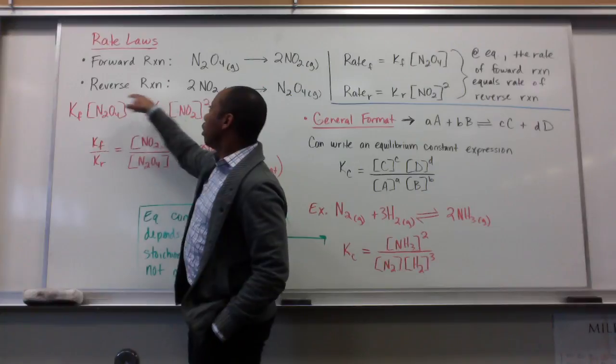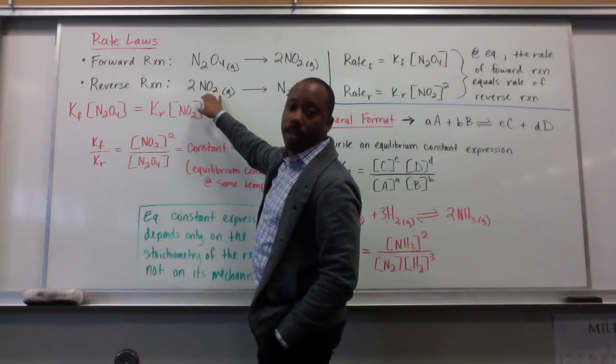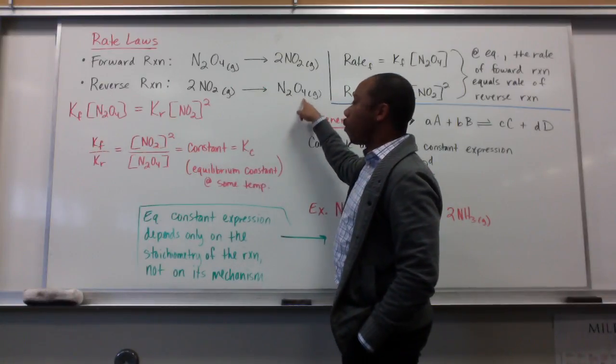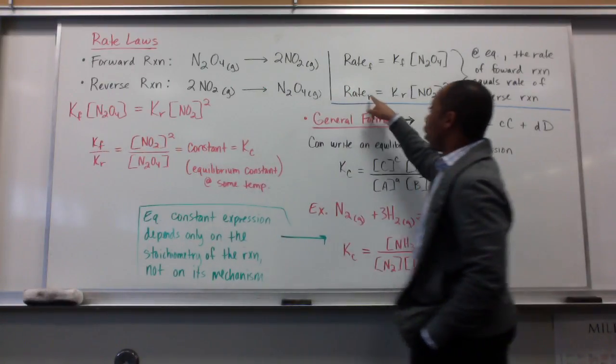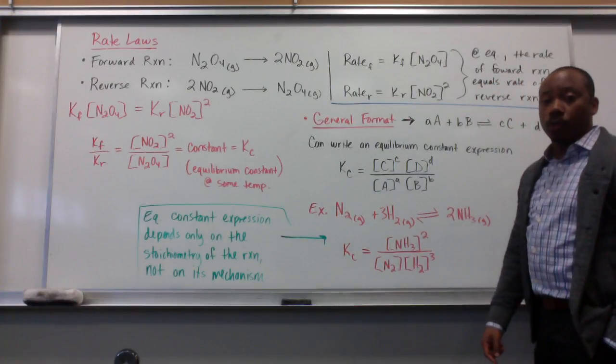For my reverse reaction, the 2 moles of NO2 are now my reactant, forming, or going, you know, backwards, to the N2O4. My rate law for that is, the rate of the reverse reaction equals K sub R, times the concentration of NO2 squared.